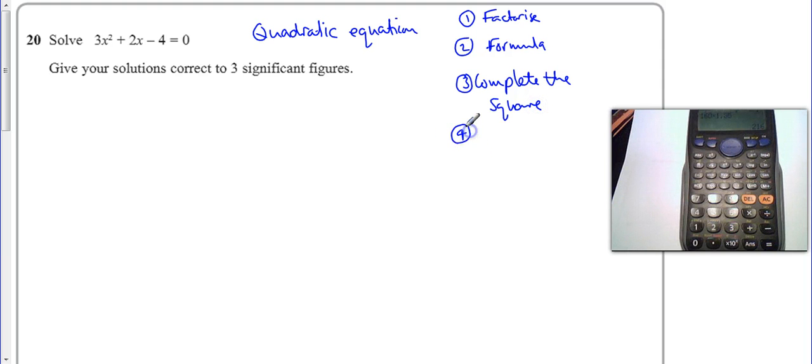And the fourth method is the graphical method, which we've already used this paper. We draw the graph and have a look. Now there's a clue here. It says three significant figures.